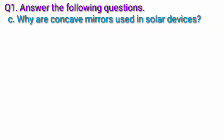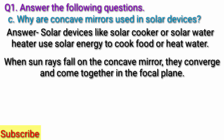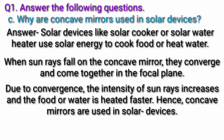Question C: Why are concave mirrors used in solar devices? Answer: Solar devices like solar cookers or solar water heaters use solar energy to cook food or heat water. When sun rays fall on the concave mirror, they converge and come together in the focal plane. Due to convergence, the intensity of sun rays increases and the food or water is heated faster. Hence, concave mirrors are used in solar devices.